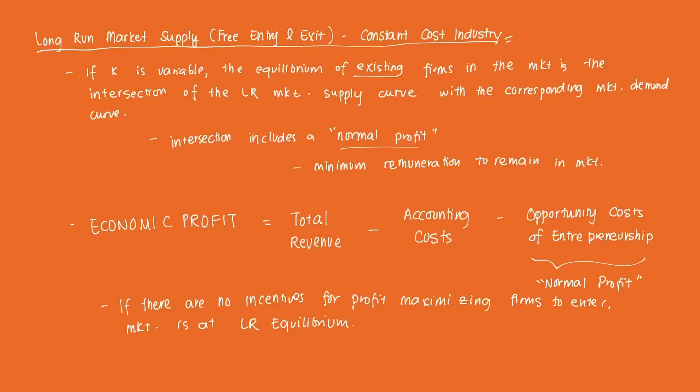If capital K is variable, then the equilibrium of existing firms in the market is given by the intersection of the long-run market supply curve with the corresponding market demand curve. When we're in the long run, no input is held fixed — all inputs are variable. Note that an individual firm's long-run cost, and therefore the long-run market supply function, includes something called a normal profit.